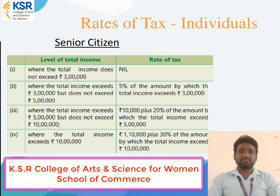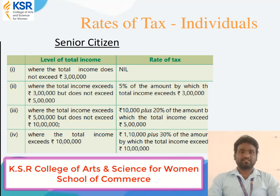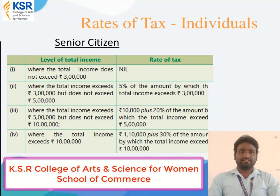Under senior citizen: where total income does not exceed three lakh, the rate of tax is nil. Where total income exceeds three lakh but does not exceed five lakh, the rate is five percent of the amount by which total income exceeds three lakh. Where total income exceeds five lakh but does not exceed ten lakh, the rate is ten thousand plus twenty percent of the amount by which total income exceeds five lakh. Where total income exceeds ten lakh, the rate is one lakh ten thousand plus thirty percent of the amount by which total income exceeds ten lakh.